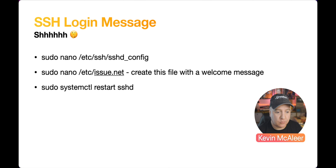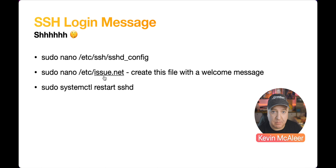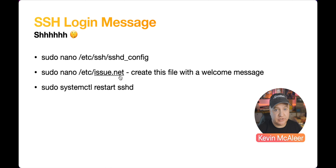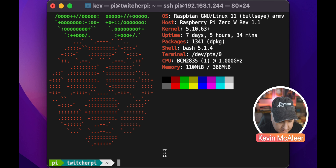Next we're going to change the SSH login. Before, we simply got a password prompt with no other message. If we edit the SSH daemon config file and point the banner to issue.net, we can add our own welcome message. When a user uses SSH to connect to our Raspberry Pi they'll get that issue.net text file displayed before they log in. We do need to use sudo because it's a system file: sudo nano /etc/ssh/sshd_config.